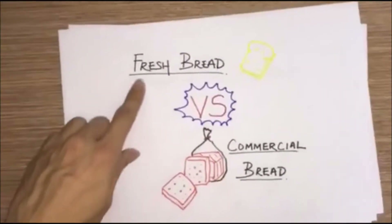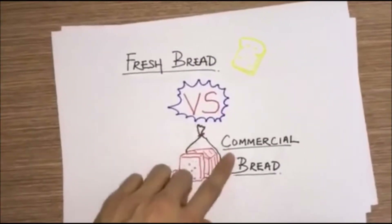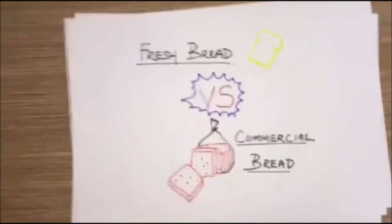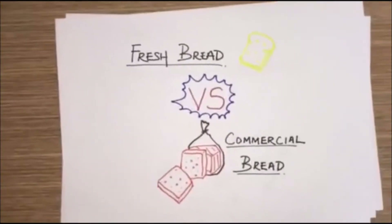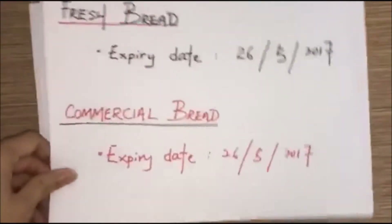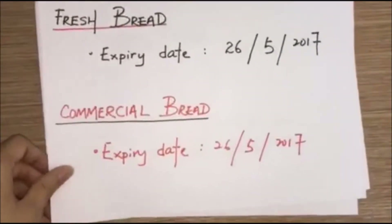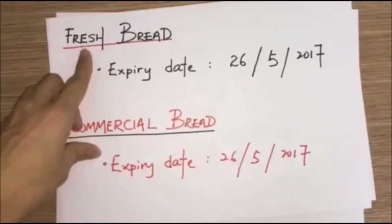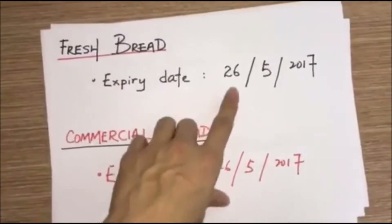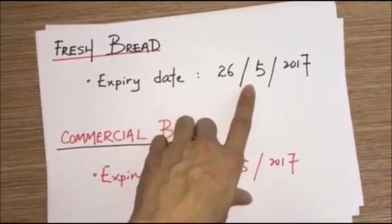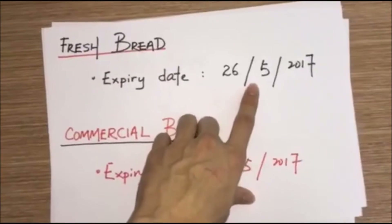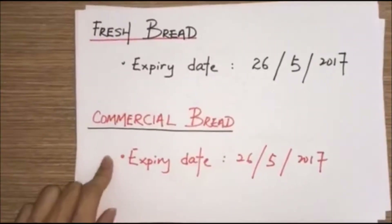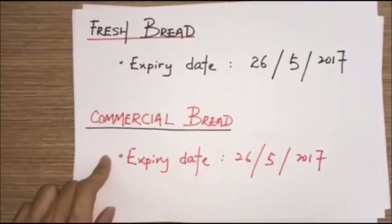We use fresh bread and also commercial bread as our model in the experiment. The expiry date of fresh bread is 26th of May 2017, same goes to the commercial bread.